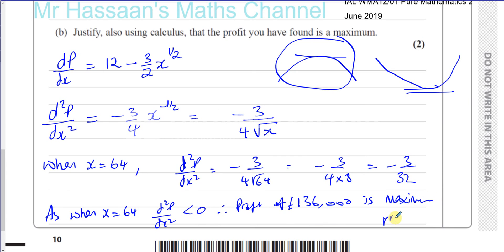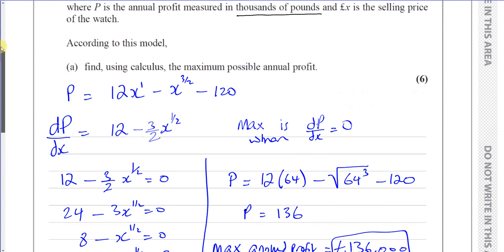So a qualifying statement like that is important to include. One thing to remember: the square root sign always denotes a positive square root. That completes the answer to question number 5, parts A and B.